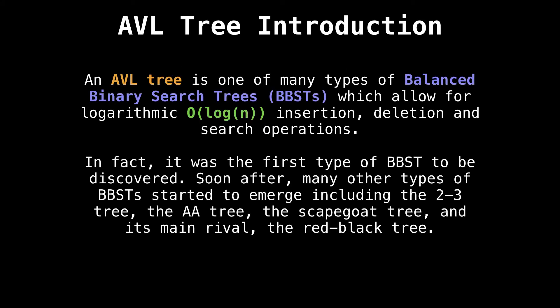All right, before we get too far, I should mention what an AVL tree is. An AVL tree is one of many types of balanced binary search trees, which allow for logarithmic insertion, deletion and search operations. Something really special about AVL tree is that it was the first type of balanced binary search tree to be discovered.